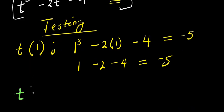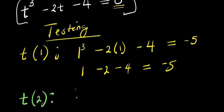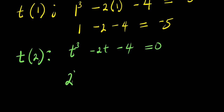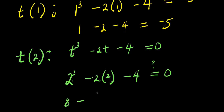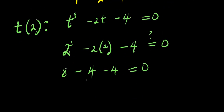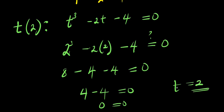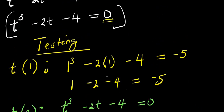Let's consider t = 2. We substitute into t³ − 2t − 4 = 0: 2³ − 2(2) − 4 = 8 − 4 − 4 = 0. Yes, 0 = 0, so t = 2 is one of the solutions.